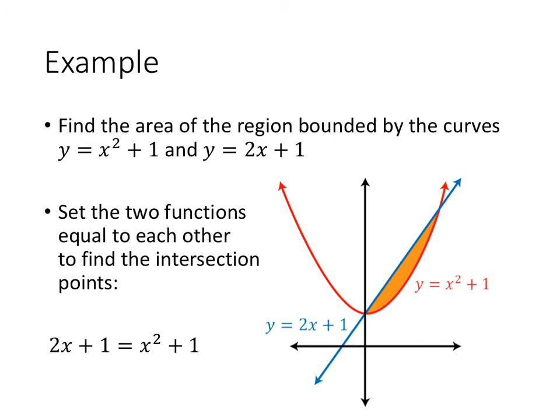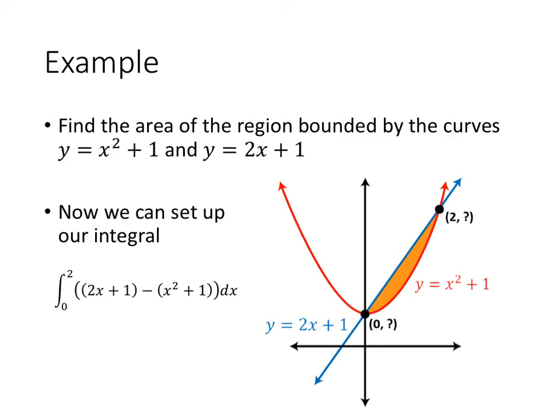To find the intersection points, we set the two curves equal to each other and solve. When we do that, we get two solutions, x equals 0 and x equals 2. And that helps us locate the points where these functions cross.